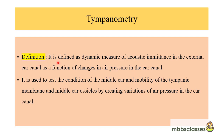Tympanometry is defined as the dynamic measure of acoustic emittance in the external ear canal as a function of changes in air pressure in the ear canal. It is a test used to assess the condition of the middle ear and the mobility of the tympanic membrane and middle ear ossicles by creating variations of air pressure in the ear canal.